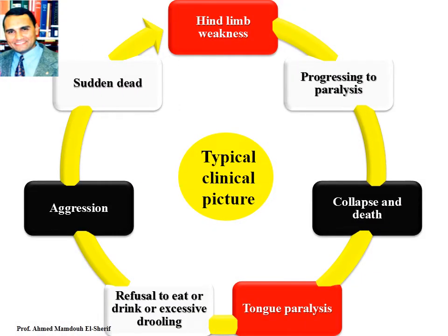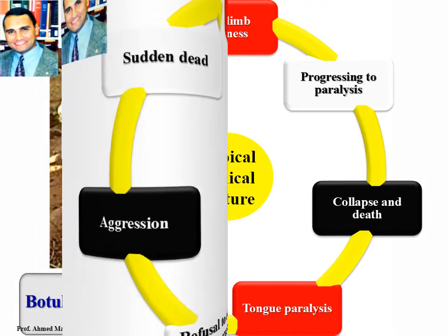The typical clinical picture of botulism includes: hind limb weakness progressing to paralysis, then collapse and death, tongue paralysis, refusal to eat or drink or excessive drooling of saliva, aggression, and sudden death.